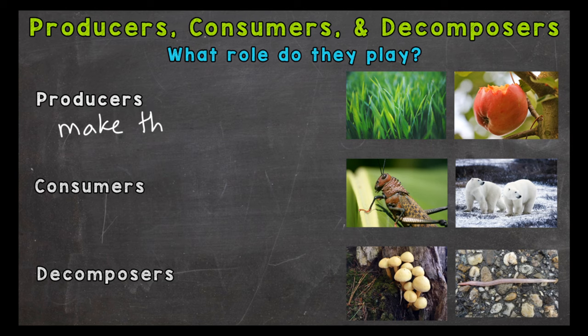Plants, trees, algae, and some types of bacteria act as producers. All energy within an ecosystem starts with the Sun, so producers are essential to all other life. Everything here on Earth starts with them. Without producers there would be no way for energy to enter an ecosystem. We have a couple of examples to the right — some grass and an apple tree.